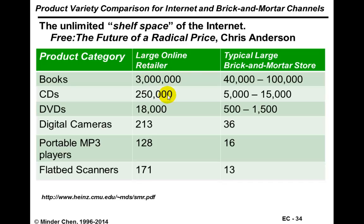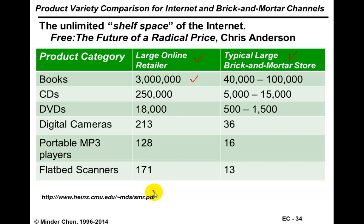In terms of number of items carried by traditional brick-and-mortar stores compared to large online stores: instead of 40,000 to 200,000 books, Amazon easily carries 3 million to 5 million books. For CDs, DVDs, or electronics, it's the same pattern. This comes from a Sloan Management Review academic research article — you're encouraged to take a look at it.